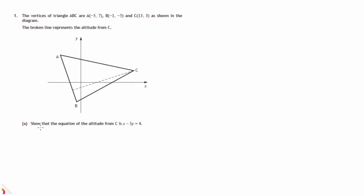We're asked to show that the equation of that altitude is given by x minus 3y equals 4. Let's have a working diagram here and transfer information onto this diagram. A is the point (-5, 7), C is the point (13, 3), and B is the point (-1, -5).